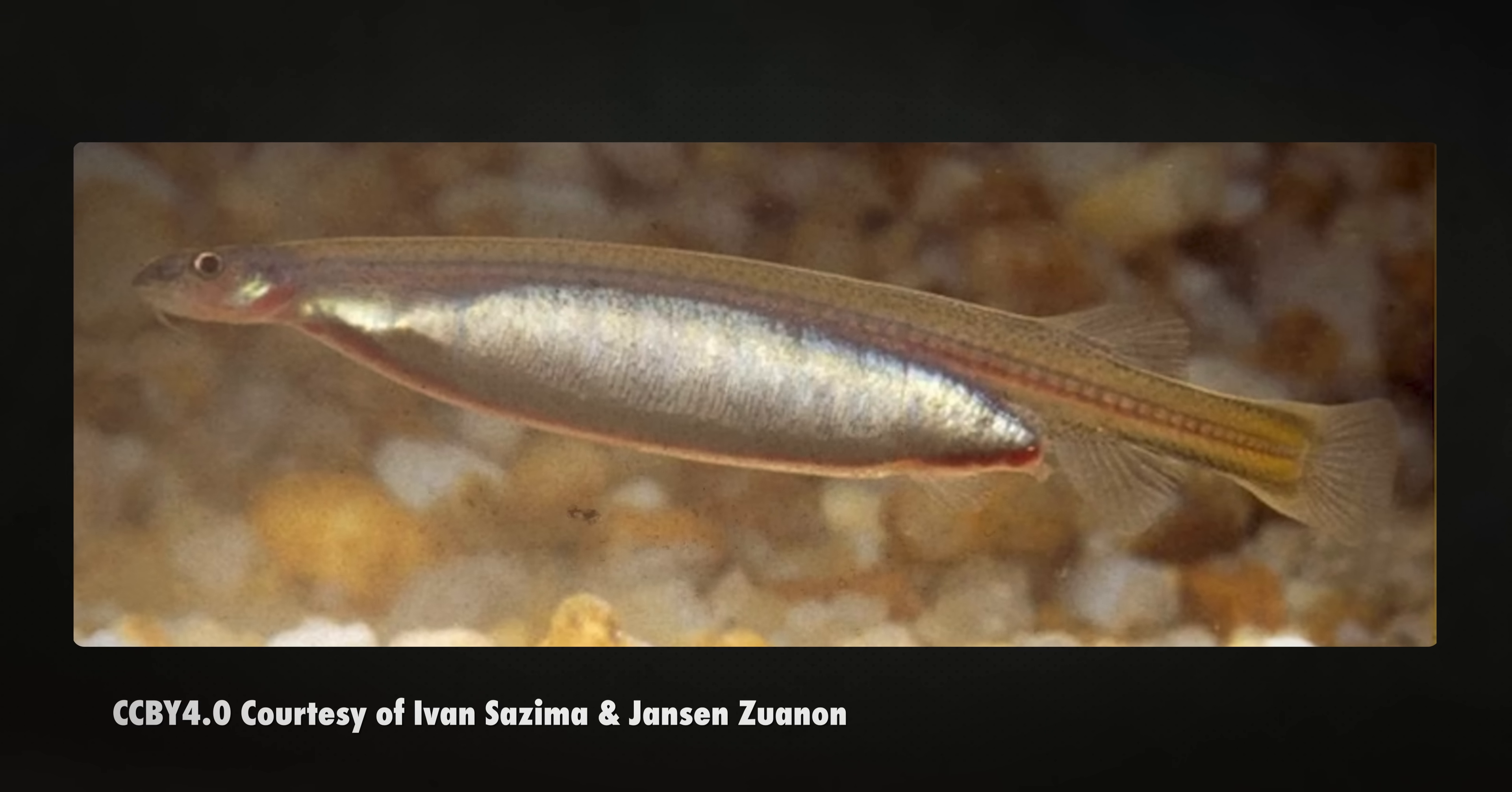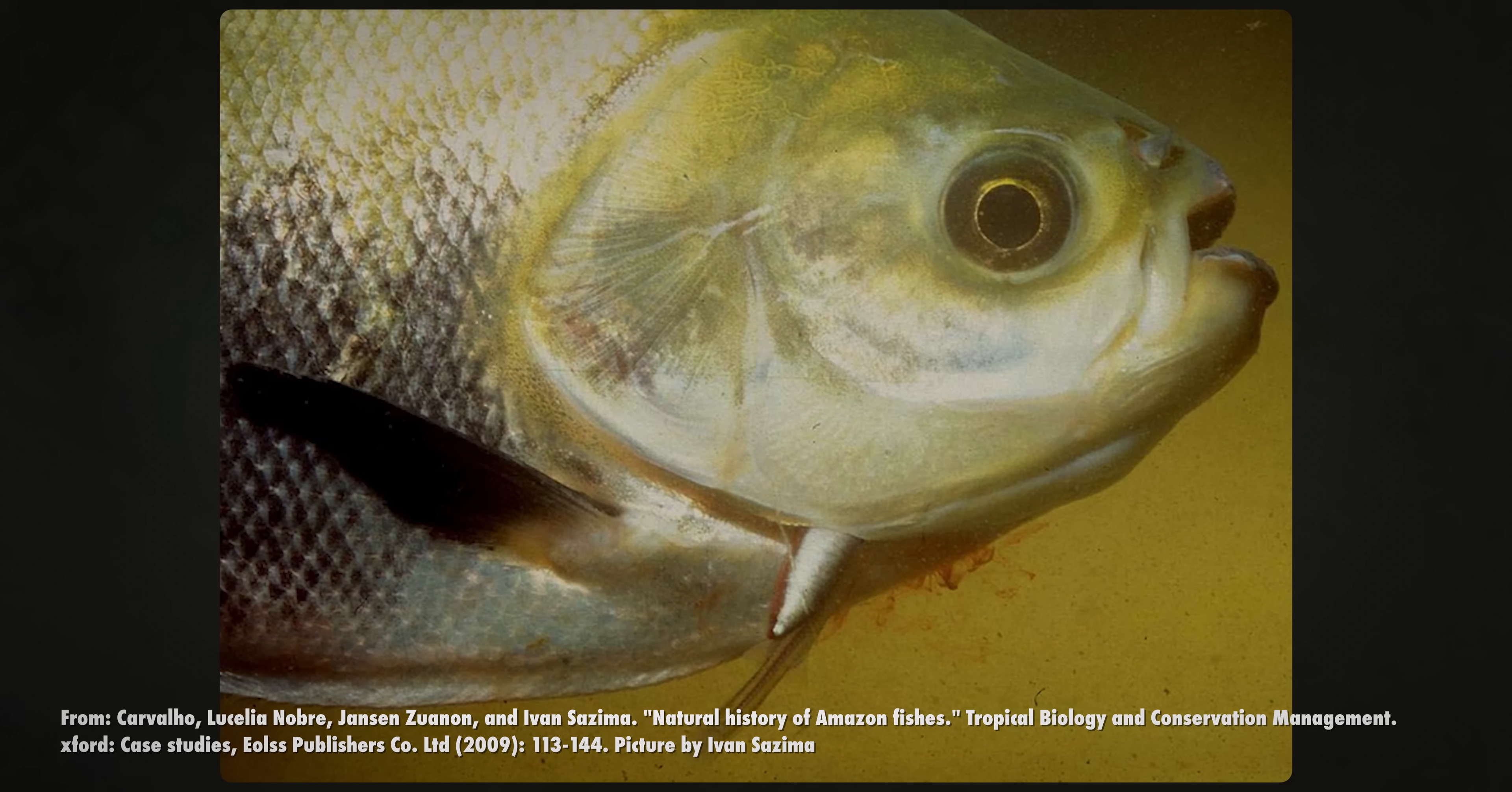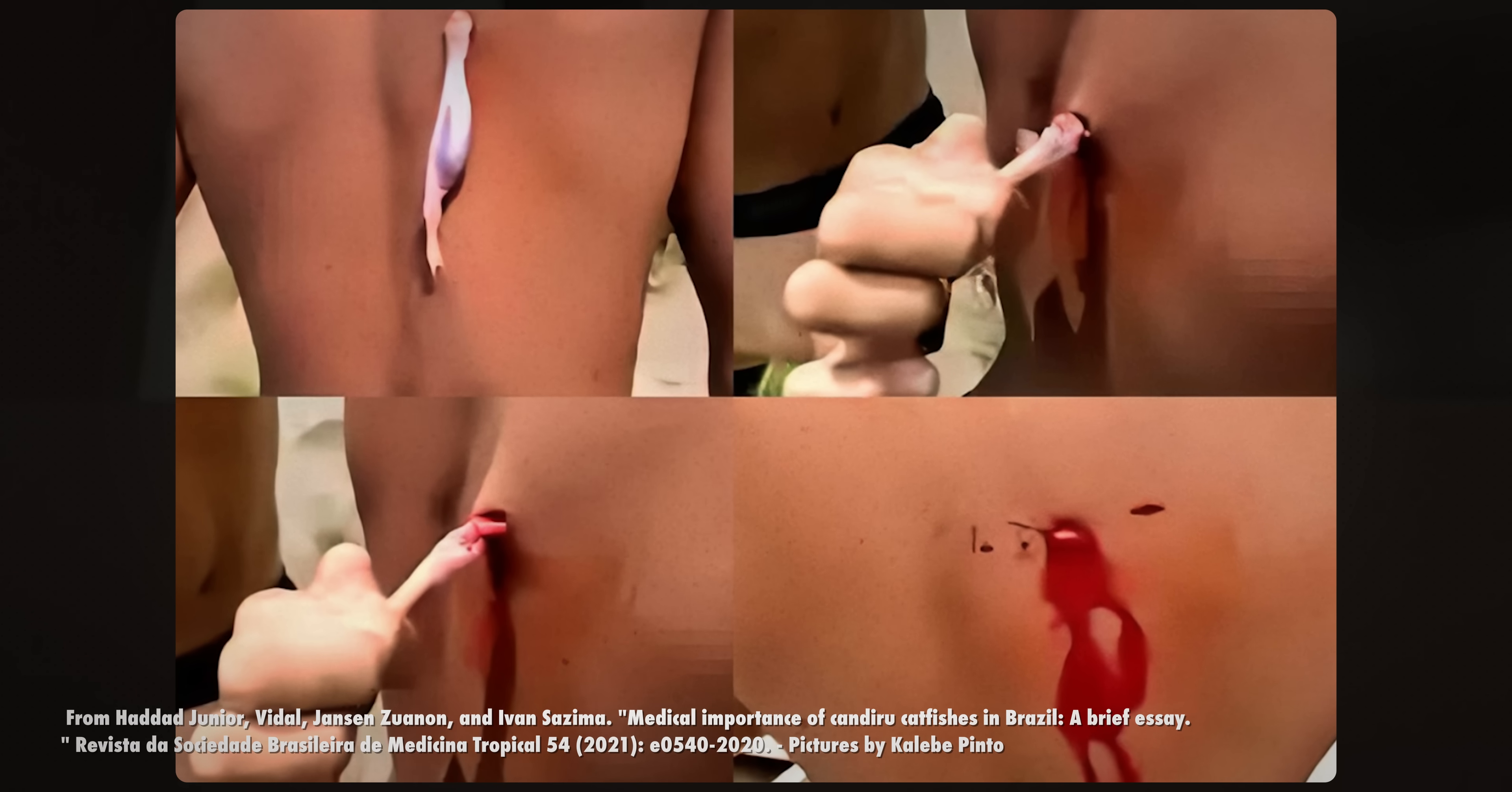But okay, we've beaten around the bush for too long now. We promised you vampire fish, and we're going to give it to you. This is the Kandiru. Kandirus are parasitic fish. They're long and thin, and have a great sense of smell. It looks for the ammonia-rich water coming out of the gills of larger fish, like most of the ones we've mentioned in this episode. Once the host is found, it attaches itself to gill chambers and sucks on blood until it's full. After that, it lets go, often causing little to no harm to its prey.